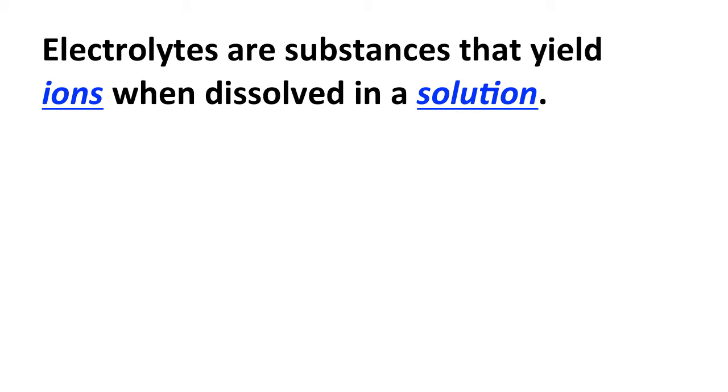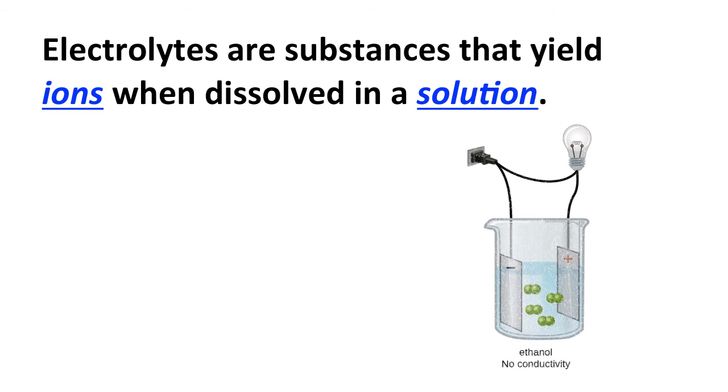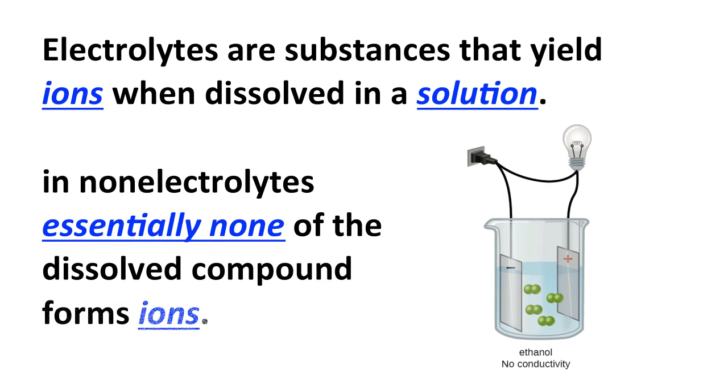Now, we have seen strong electrolytes and weak electrolytes, and it turns out we can also have substances like ethanol that, when dissolved in water, they will dissolve, but they don't conduct electricity, or at least not to any very measurable extent. And substances like ethanol are what are called non-electrolytes, and in non-electrolytes in general, essentially none of the dissolved compound forms ions. So the ethanol dissolves in water, but it does not form positive-negative ions to much extent at all, and therefore that solution is non-conductive.